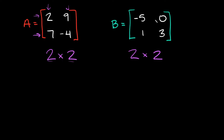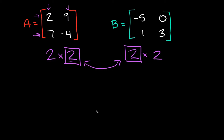Now in order to multiply two matrices together, this number right here and this first number right here have to be the exact same. If they're not, you cannot multiply these together. So if I'm trying to multiply A times B, you need to check that the last number — which is the columns of matrix A — and this number here, which is the rows of matrix B, those two numbers have to match up. Since in this case they do, that means we can multiply these together.